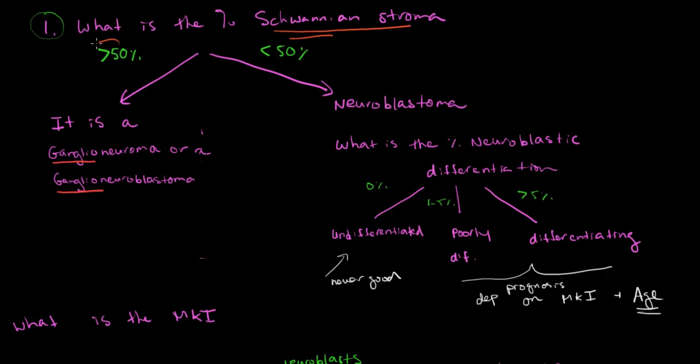If the percent of Schwannian stroma is greater than 50%, it's not even a neuroblastoma anymore. It's either a ganglioneuroma or a ganglioneuroblastoma, depending on the presence or absence of naked neurites. But we won't go into too much of that detail. That's really more subspecialist at that point. I really just want you to understand the broad concepts here.